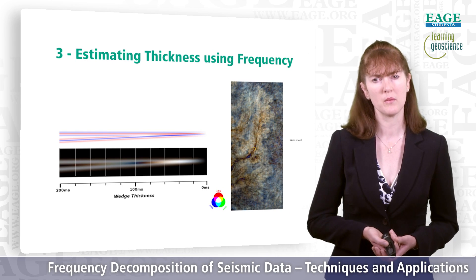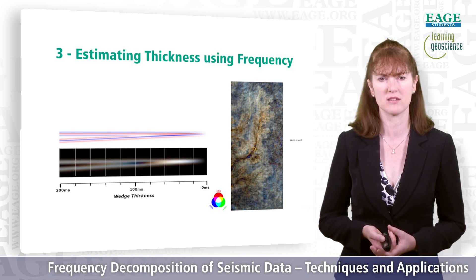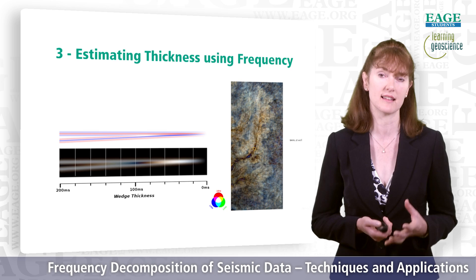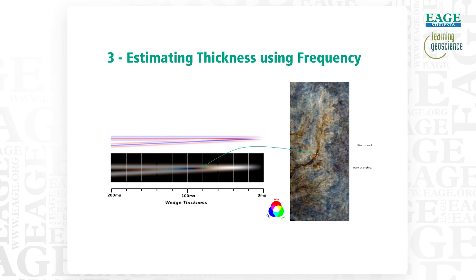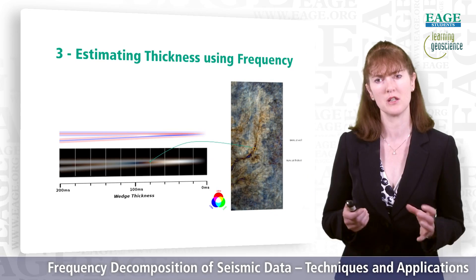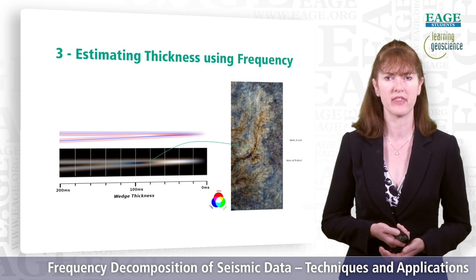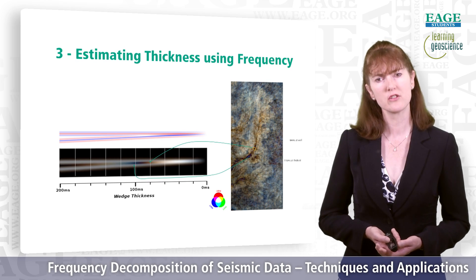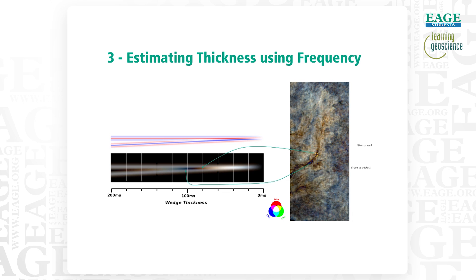This is illustrated with an RGB blend of a submarine fan system on the right-hand side and a wedge model with decomposition matching what was run on the seismic. At our well location, where we know the sand is 84 milliseconds thick, we can use that to calibrate our wedge and compare the colors in the seismic with what we see on the wedge. Once the wedge is calibrated and we know that color represents 84 milliseconds, we can look at other areas of that fan and read off their thickness. For example, the thickest part of the channel, appearing in blue, gives a response of 110 milliseconds according to our wedge model. So using a Fourier transform or continuous wavelet transform technique, we can estimate bed thicknesses from our seismic data.